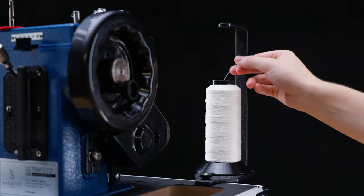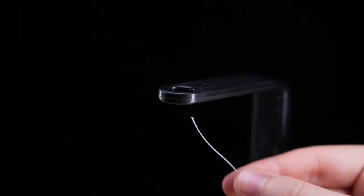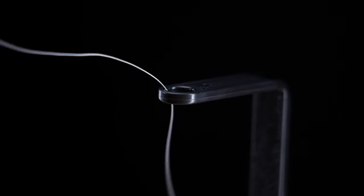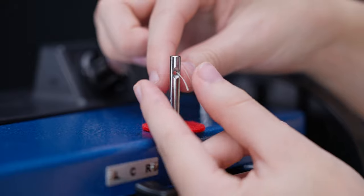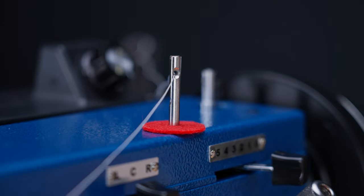To thread the Ultrafeed using a cone of thread, start by running the thread through the top of the thread stand arm. Then pass the thread through one hole in the thread post. We recommend the hole that has the most direct path to the bobbin tensioner.